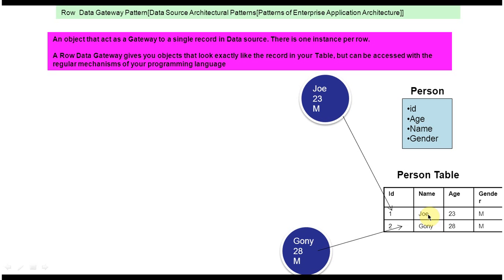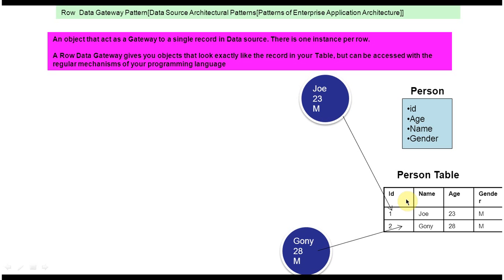For each row, one instance will be there. As per this design pattern, an object acts as a gateway to a single record — in this case, this object acts as a gateway to the Joe record, and this other object acts as a gateway to the Goni record in the person table. The second point: a Row Data Gateway gives you objects that look exactly like a record in your table. If you look at this object, whatever values are there, it looks exactly like the first row in the person table.